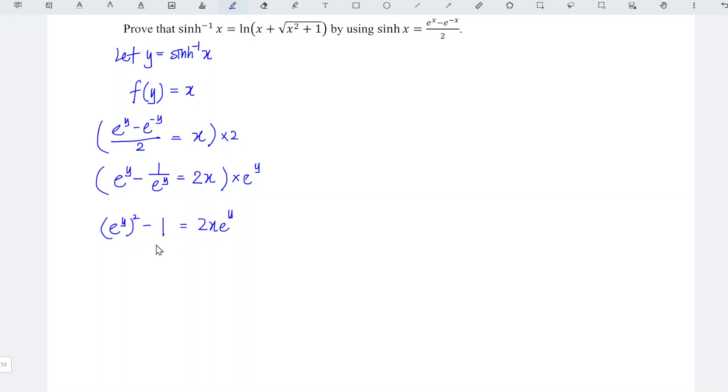So which means that we have e^y squared minus 2x e^y minus 1 is equal to 0. Up to this stage we just have to apply the quadratic formula.